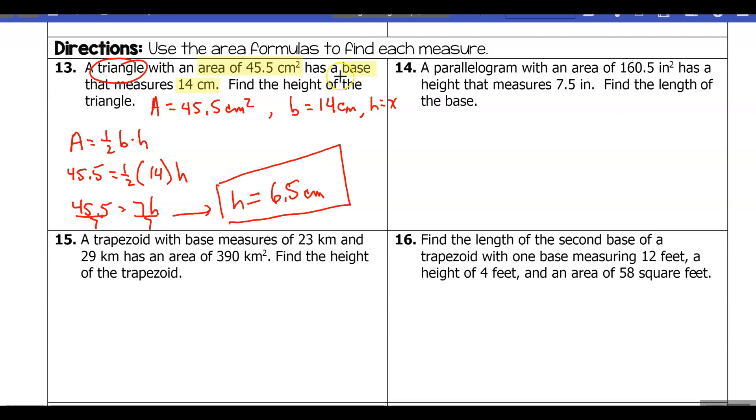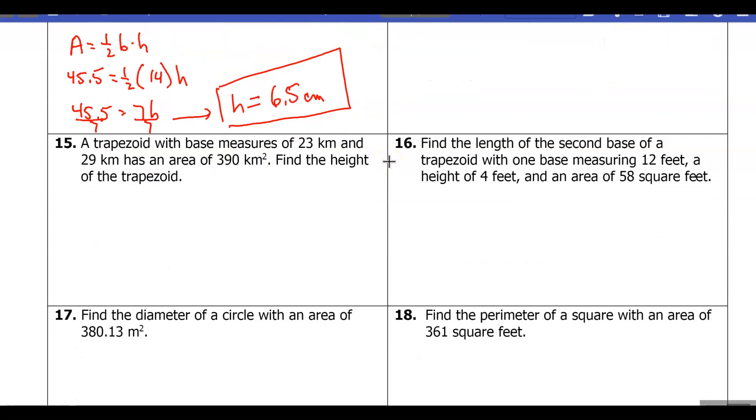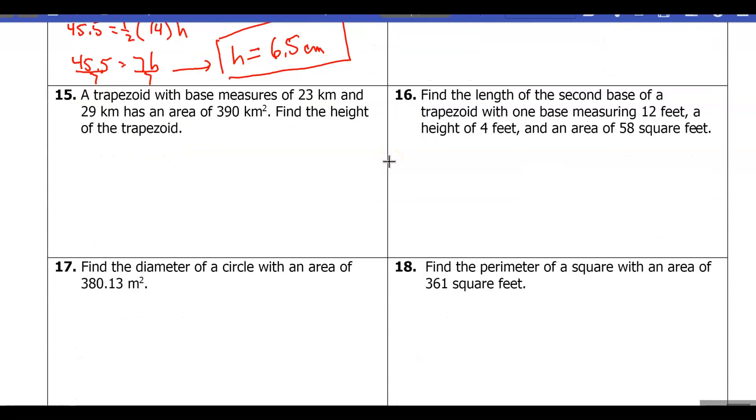So we're working backwards for this problem. Let's take a look at one more—we'll keep this video short. Number 15, let's read the question. It says a trapezoid with base measures of